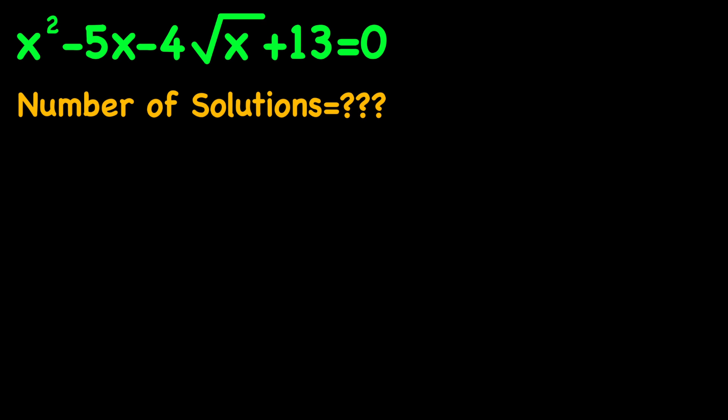The first thing we might notice is that 13 is the constant term of our equation. Now 13 is the lucky number here because we can replace it with 4 plus 9. Both 4 and 9 are perfect squares, which gives us the idea that they may be parts of some perfect square expression. So we need to use the completing the square strategy to solve our equation — and that's exactly the case.